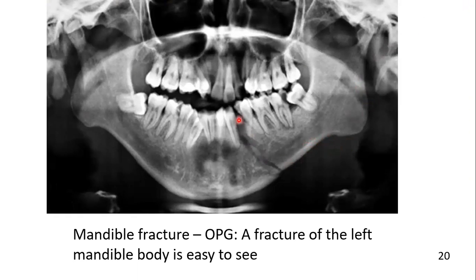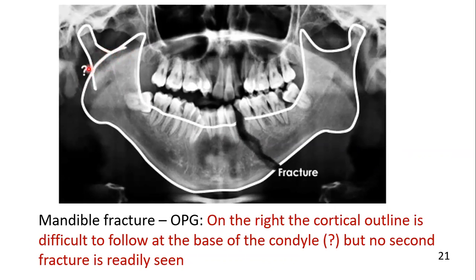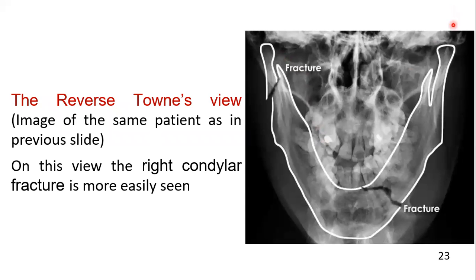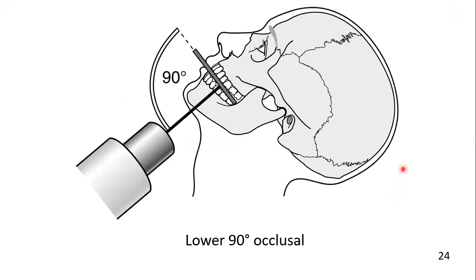In this OPG, the fracture in the body area of the mandible is clearly seen. However, there is doubt on the right side — the cortical outline is difficult to follow at the base of the condyle, so only a single fracture in the body is seen easily. Taking the reverse Towne view, the condylar area is easily appreciated and the right condylar fracture is clearly visible.